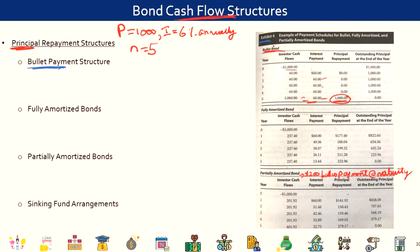Nearly every government bond that has ever been issued will be a bullet payment structure. Now, fully amortized bonds and partially amortized bonds — before addressing these two, let me briefly talk about amortization. An amortizing bond essentially has a payment schedule that calls for periodic payments of interest and principal. Unlike your bullet bond where the entire principal is paid as a bullet in one shot in the fifth year, in amortizing bonds part of the principal is also getting paid each year.